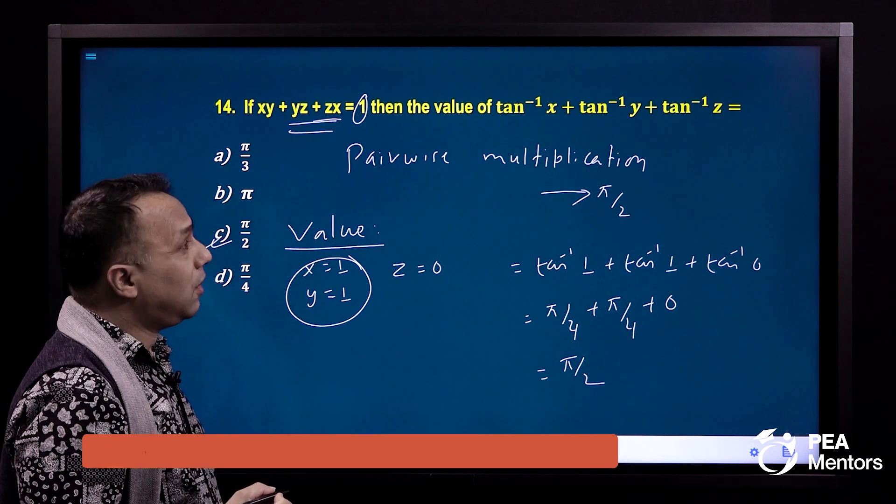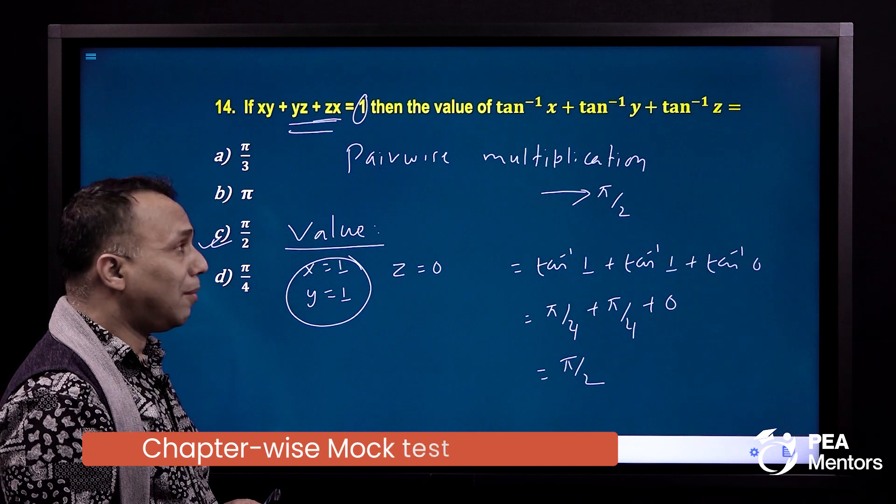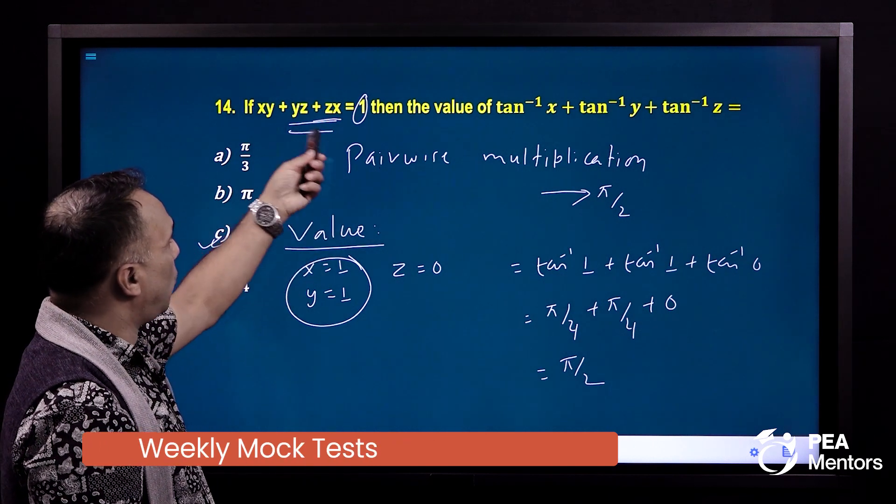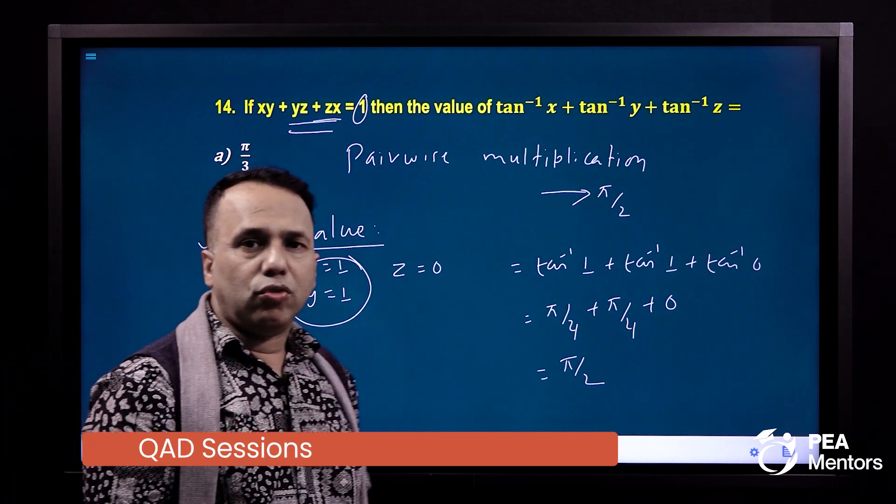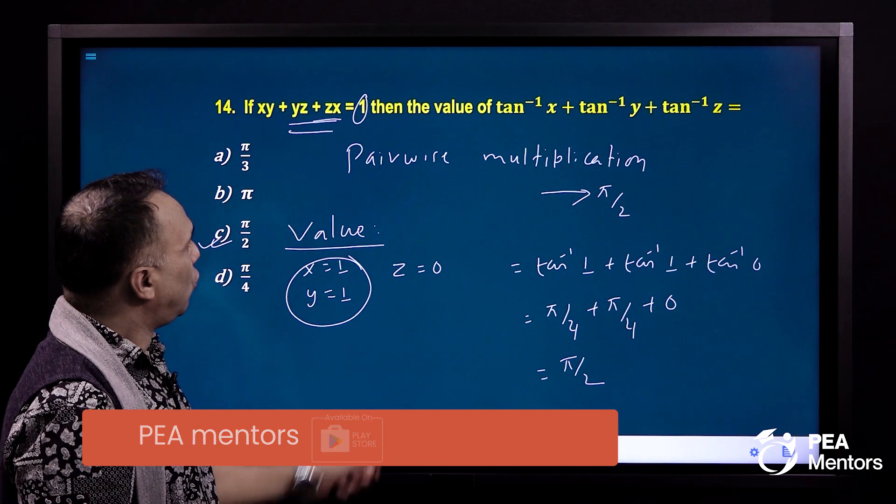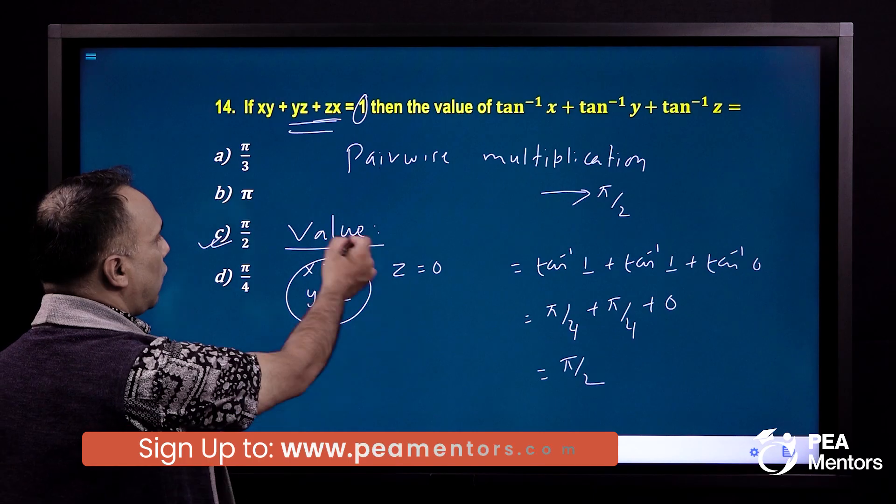This is the third method using substitution. The formula method will work. The second method is the pairwise multiplication: x into y plus y into z plus z into x equals 1. That gives pi by 2. This is the value.